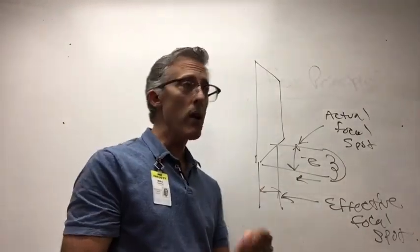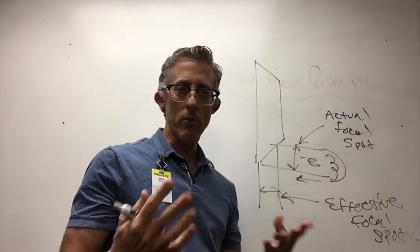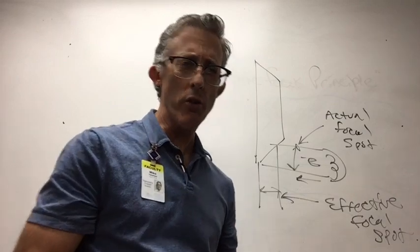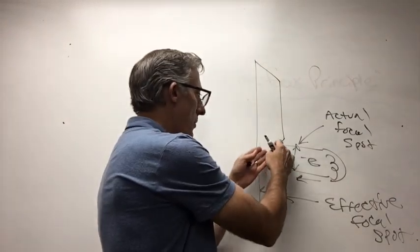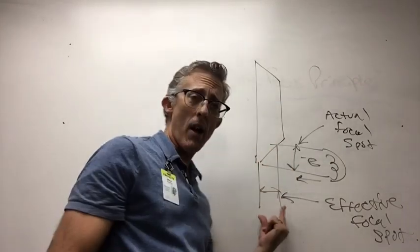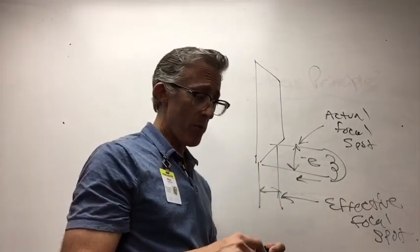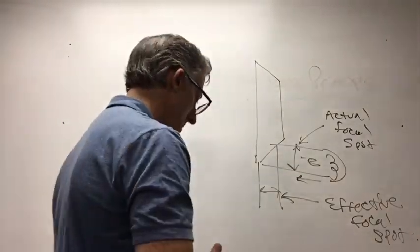So in order to do that, we want to spread those electrons out as much as possible. So we run into a conundrum, don't you think? In spreading those electrons out as much as possible, we then have a wider effective focal spot. How do we get around this? Simple geometry. The line focus principle. It's an amazing thing.